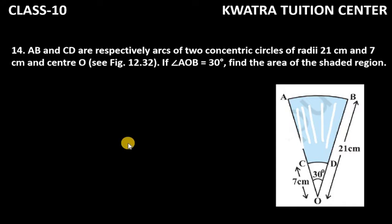So how will this shaded region come out? You have to find the bigger sector A, O, B. And what will you do? You will minus the small sector. You will get the required result.